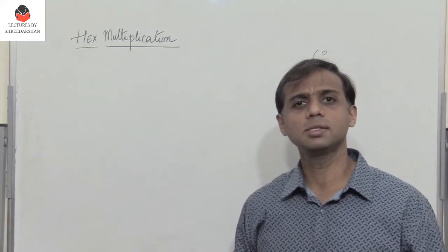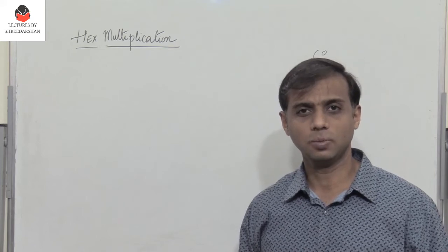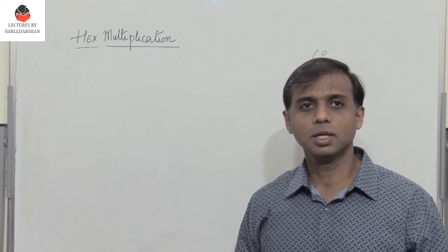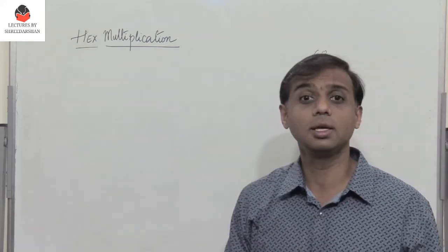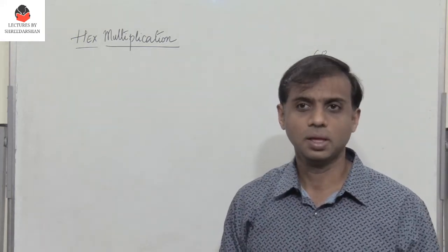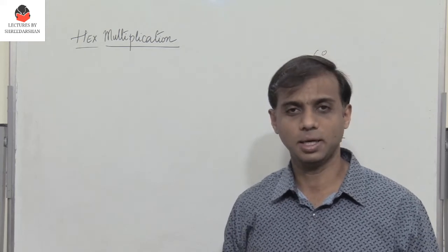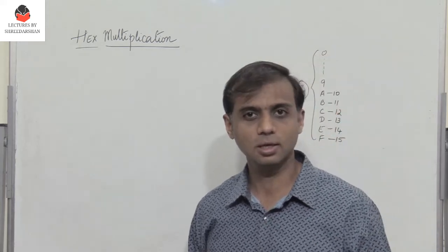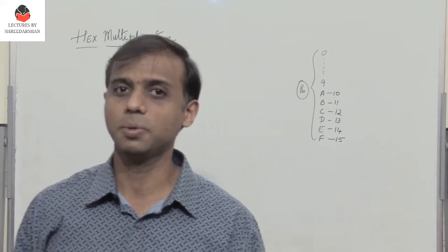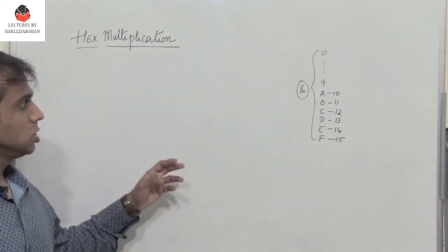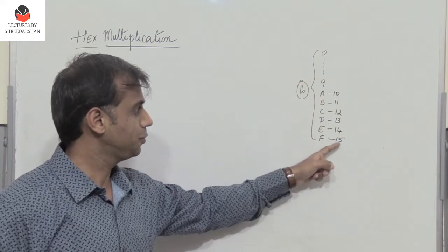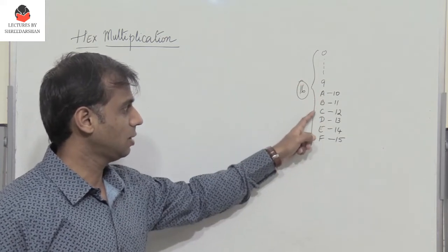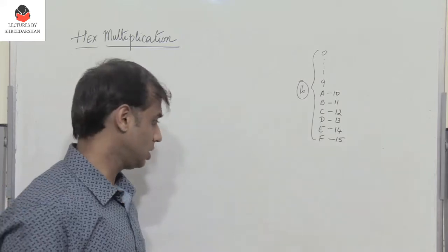Now when you perform hexadecimal multiplication, when you multiply two numbers, if the number becomes greater than 15, then what do you do? You convert it to hex format by dividing the given number by 16 and you proceed with the normal multiplication as usual. So let's take a few examples. You know that hex representation is 0 to 9 and 10 to 15 is represented as A, B, C, D, E, F.